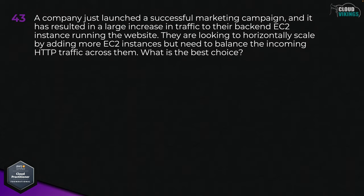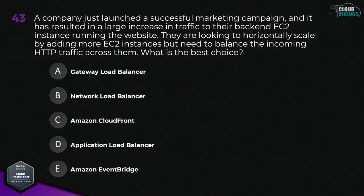Question forty-three: a company just launched a successful marketing campaign resulting in a large increase in traffic to their backend EC2 instances running the website. They're looking to horizontally scale by adding more EC2 instances but need to balance the incoming HTTP traffic across them. What is the best choice? Options are: A, use a Gateway Load Balancer; B, Network Load Balancer; C, Amazon CloudFront; D, Application Load Balancer; or E, Amazon EventBridge. The correct answer here would be D, Application Load Balancer.